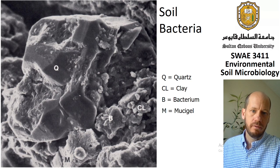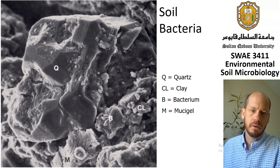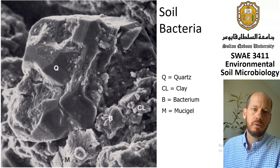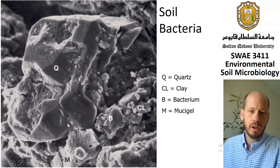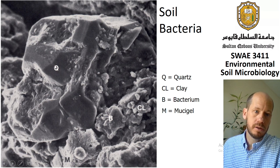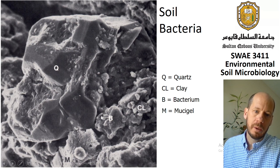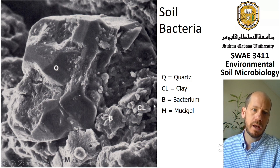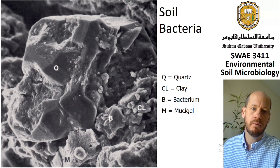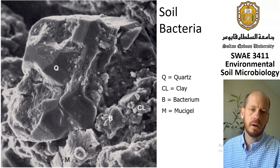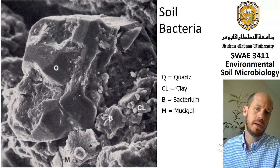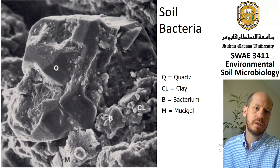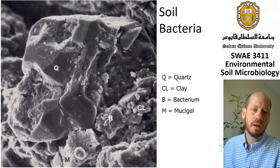In terms of size, bacteria are very small — much smaller than fungi and eukaryotes. Because of that, they can occupy the micropores in the soil. Here is a microscopy image of a quartz particle on the silt side, with some clays and silt visible. And here, very small, you have a rod of probably a bacterium occupying a micropore in the soil.